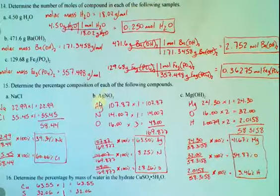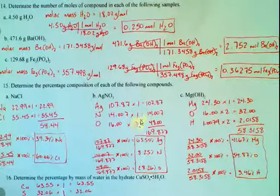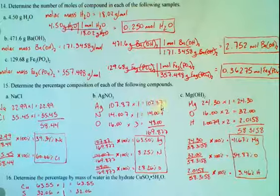For B, I have one silver atom, one nitrogen atom, and three oxygen atoms. I have my mass due to silver, mass due to nitrogen, mass due to oxygen, and my total mass.